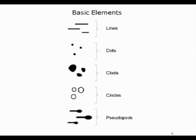What is a clod? A clod is a solid object that is larger than a dot and may have any shape. It may be round, it may be oval like a globule, but it also may be large and polygonal like cobblestone. We have circles, and we have pseudopods.